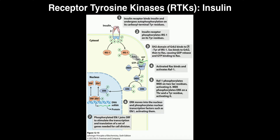Welcome back to biosignaling on Catalyst University. My name is Kevin Tokoff. In the previous set of videos, we talked extensively about the G-protein-coupled receptor. In this video, we're going to switch gears and talk about a new kind of receptor called the receptor tyrosine kinase, usually abbreviated RTK. The classic example used in most textbooks is insulin, a pancreatic hormone released by beta cells that causes glucose uptake into most cells. The question is: how does the RTK work?